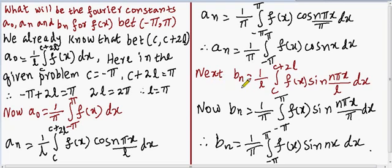Next we find the value for bn. As per the original formula, between the limits c to c plus 2l, bn is equal to 1 by l, integral from c to c plus 2l, of f of x into sin(n pi x divided by l) dx. Substituting l equals pi, bn becomes 1 by pi, integral from minus pi to plus pi, of f of x into sin(n pi x divided by pi) dx. Pi and pi cancel each other, so the final formula is bn equals 1 by pi, integral from minus pi to plus pi, of f of x into sin(nx) dx.